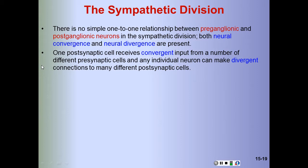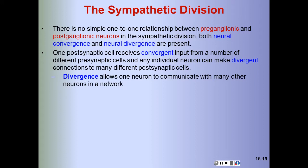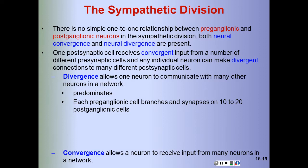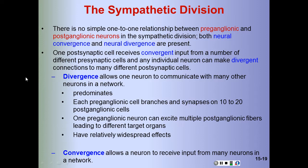There is no simple one-to-one relationship between pre-ganglionic and post-ganglionic neurons in the sympathetic division. Both neural convergence and neural divergence are present. Divergence predominates: each pre-ganglionic cell branches and synapses on 10 to 20 post-ganglionic cells. One pre-ganglionic neuron can excite multiple post-ganglionic fibers leading to different target organs, producing a relatively widespread effect.